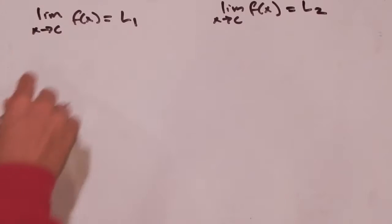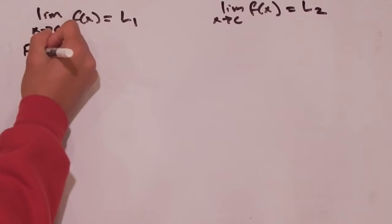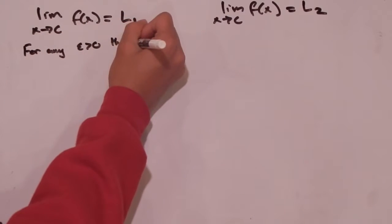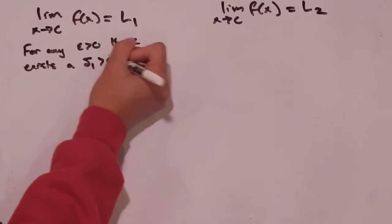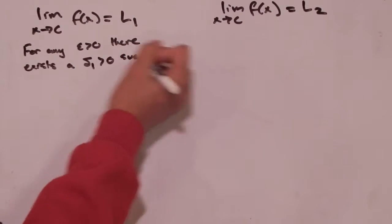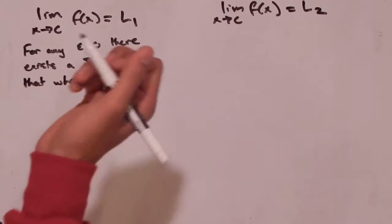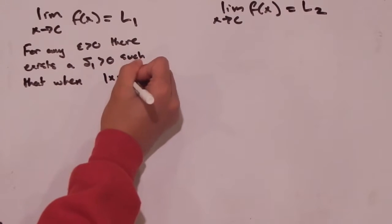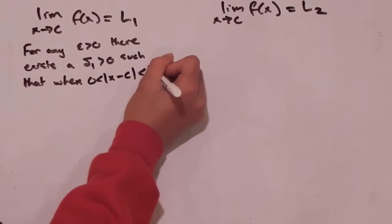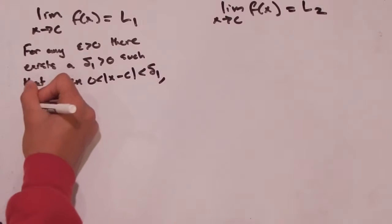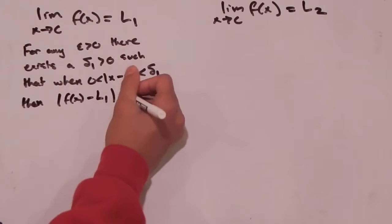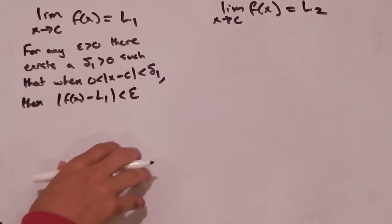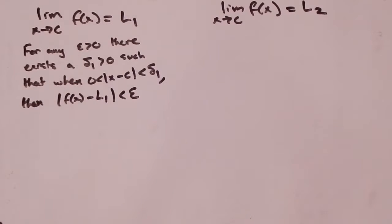So let's start with what we know. For this limit on the left side, we know for any epsilon greater than 0, there exists a delta — I'm going to call it delta 1 greater than 0 — such that when the absolute value of x minus c is greater than 0 and less than delta 1, then the absolute value of f of x minus L sub 1 is less than epsilon. This follows directly from the definition. If we assume that this limit exists and is equal to L sub 1, this follows right from that definition.